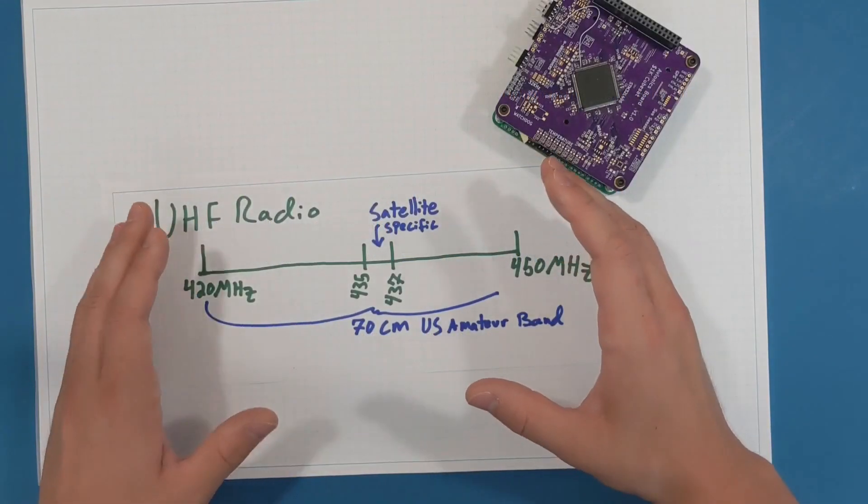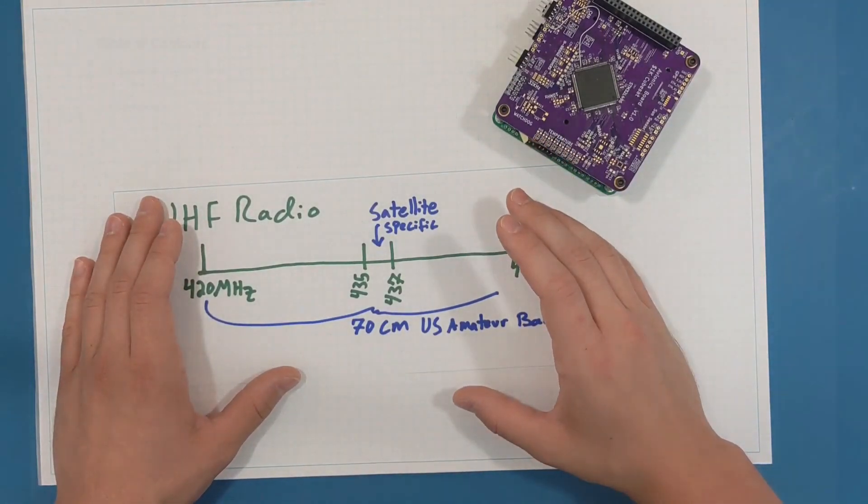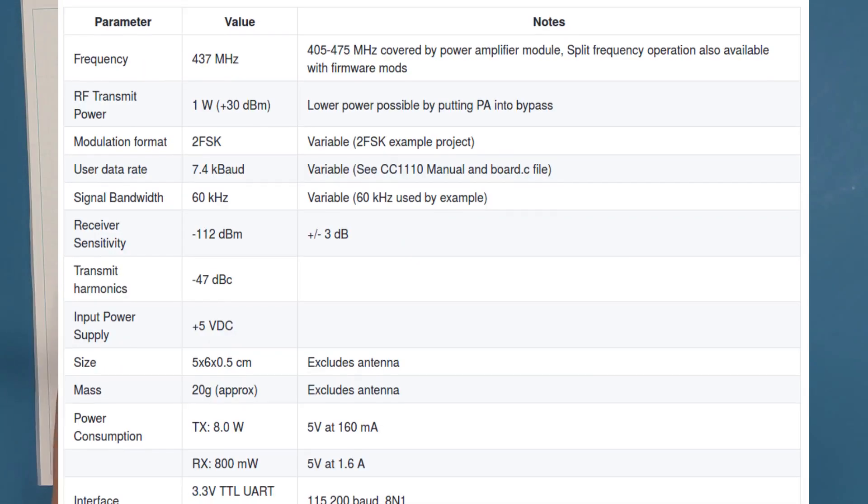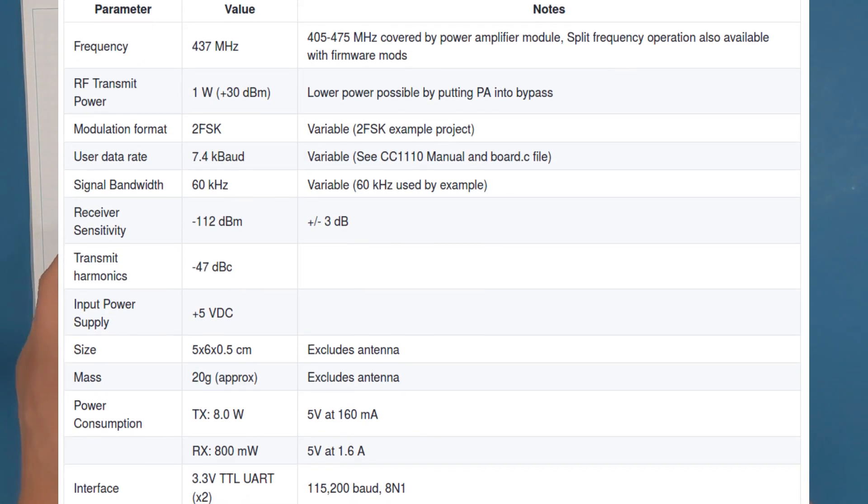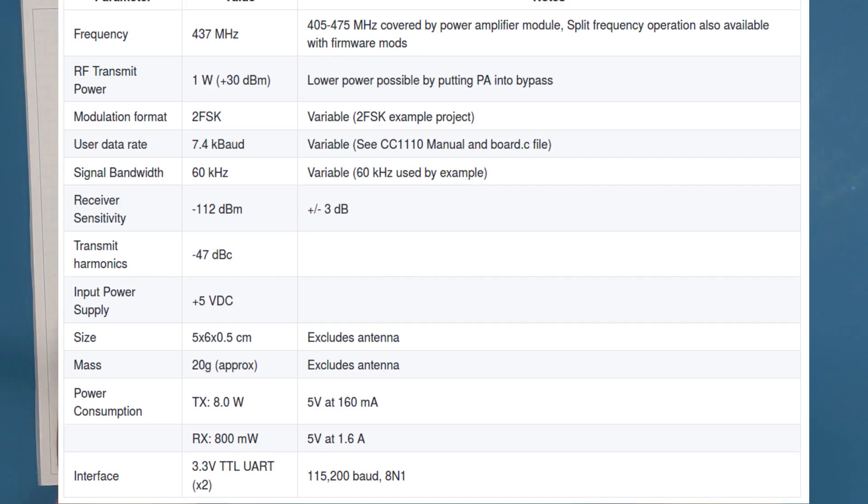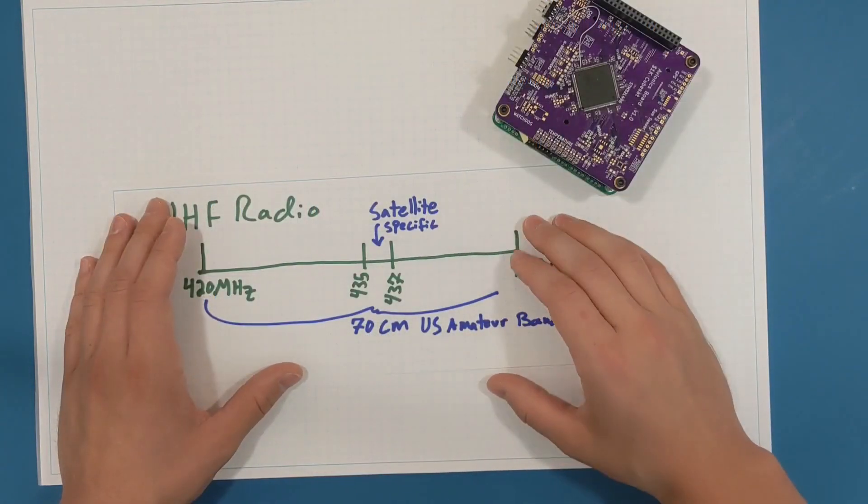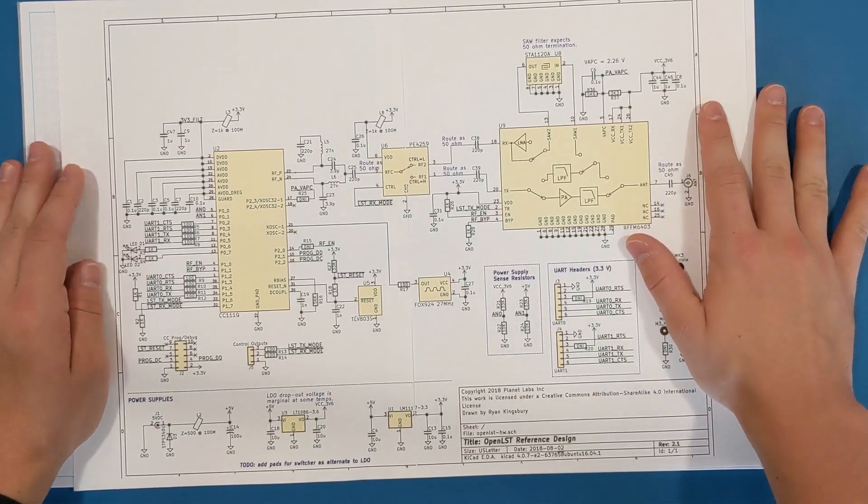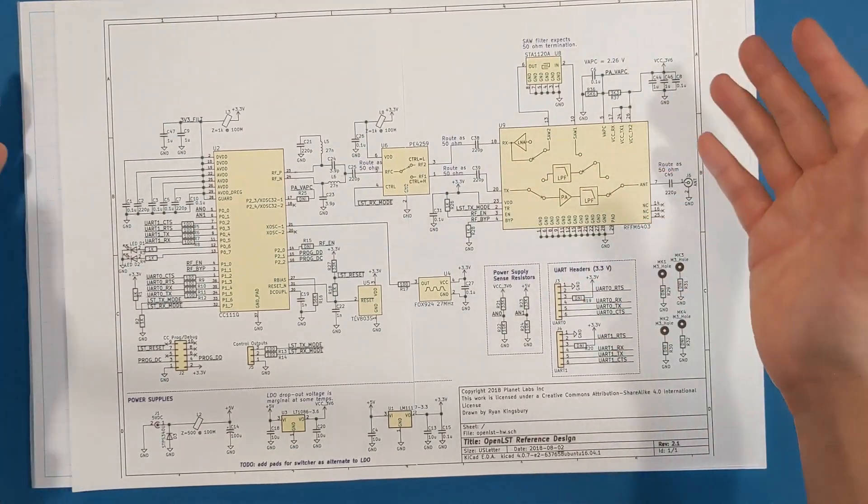In addition to the hardware design, Planet released the software for this radio and a thorough customization guide. This guide is incredibly useful and it made the decision to use this hardware as a basis design really simple. You can find the links to this below. Here's the schematic for the OpenLST hardware, it's just a single page so let's talk about it.